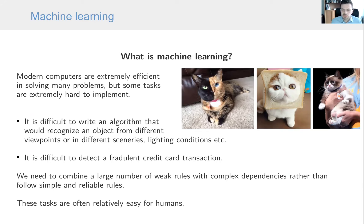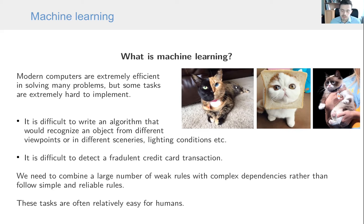For example, it is very difficult to write an algorithm that would recognize an object from different viewpoints in different scenarios — such as a program that would recognize a cat in a photo. Another example is the detection of fraudulent credit card transactions. What is common in these problems is that they require combining a very large number of weak rules with complex dependencies, rather than following simple rules. These tasks are often relatively easy for humans.